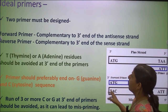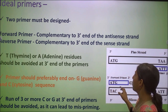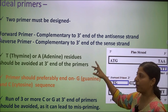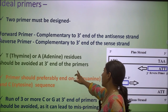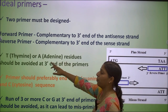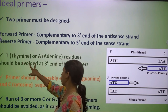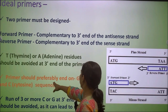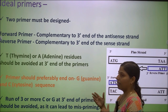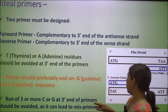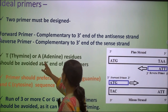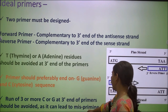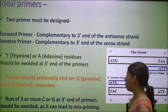For ideal primers: both forward and reverse primers must be complementary to the 3 prime end of antisense and sense strands respectively. Thymine and adenine residues should be avoided at the 3 prime end of the primer, because A-T pairs bind with only two hydrogen bonds, weakening the bond. Primers should preferably end on C or G, since G-C pairs form three hydrogen bonds, providing more stability. Runs of three or more CG at the 3 prime end should be avoided as it can lead to mispriming and stem-loop structure formation.